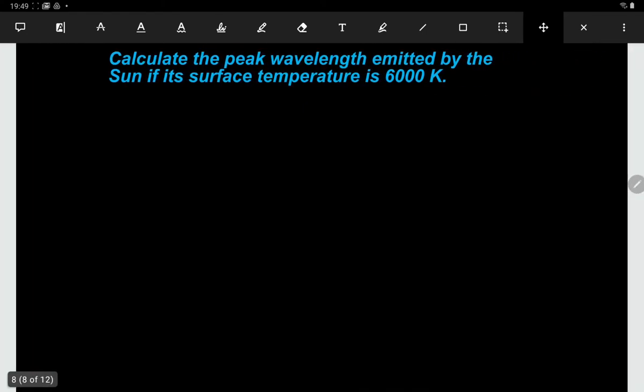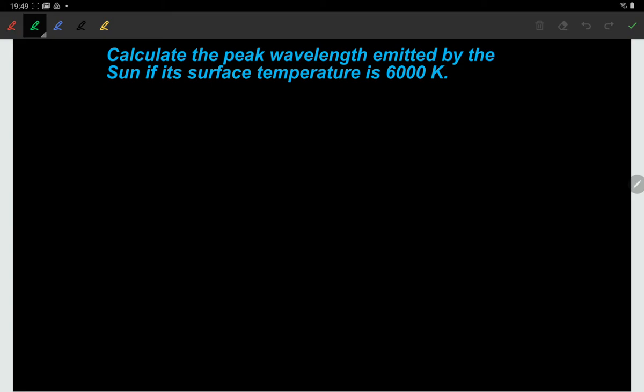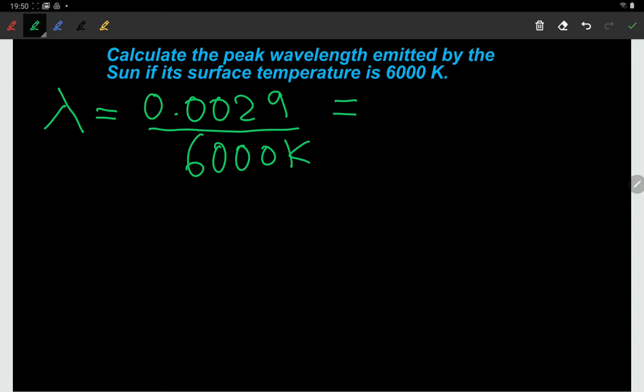So let's have a look here. Calculate the peak wavelength emitted by the Sun if its surface temperature is 6000 Kelvin. First of all we're going to have to use Wien's law. I'm going to write Wien's law, so we've got lambda, which is what we're trying to calculate, equals 0.0029 over the temperature which is 6000 Kelvin. Notice I'm using Kelvin there. If you put that in, you will get a peak wavelength of 4.83 times 10 to the power of minus 7 meters, and we can quote that in nanometers, 483 nanometers.